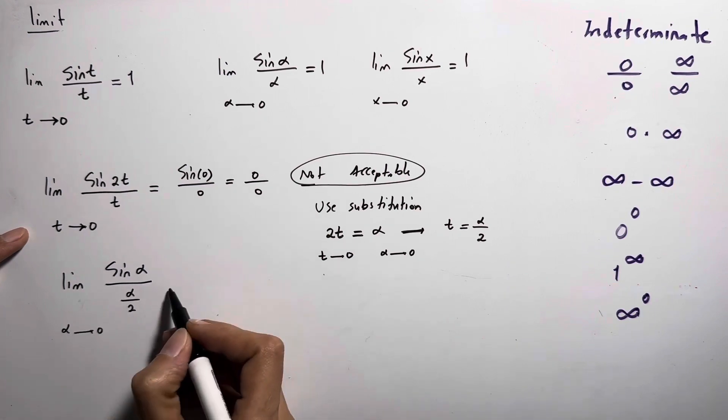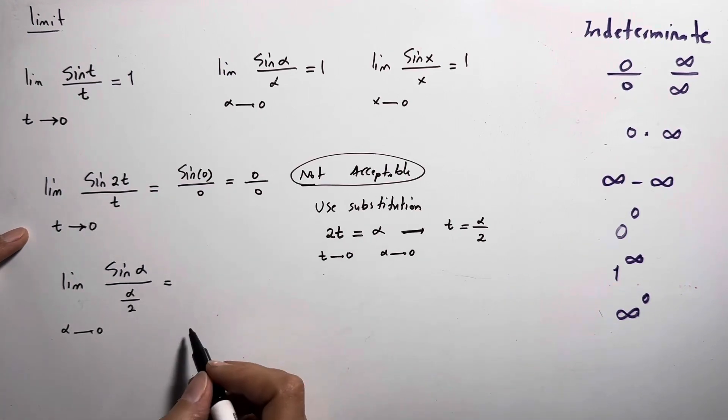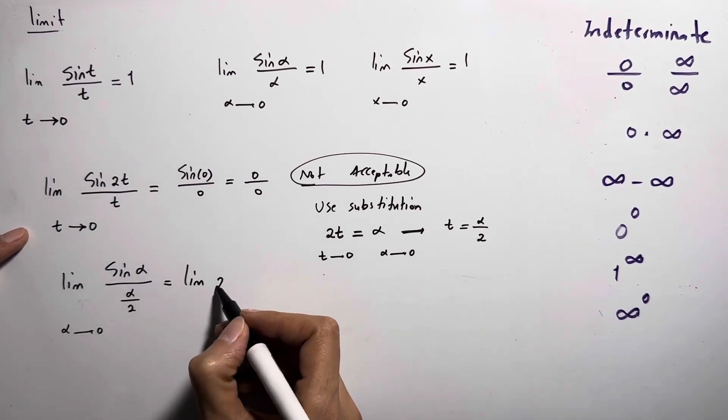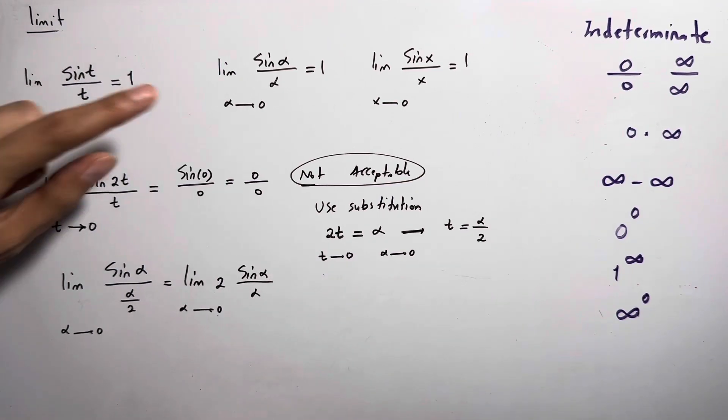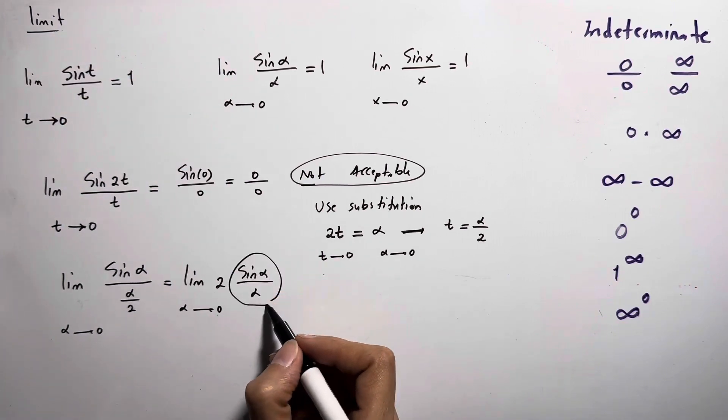So alpha goes to 0, but this can be written as the limit of 2 times sine alpha over alpha as alpha goes to 0, which is just 1. So you have 2 times 1, or 2.